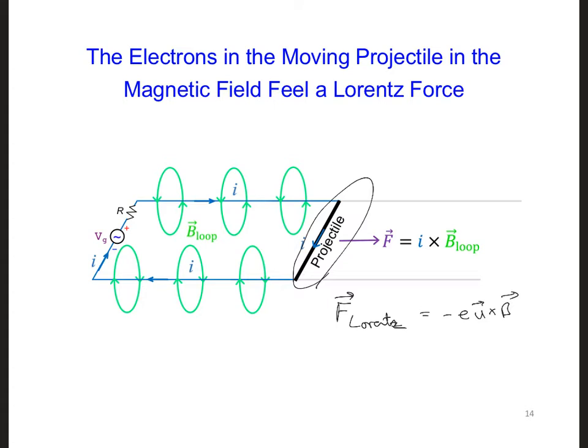So this Lorentz force will move the electrons in what direction? Let's see, it'll move towards the bottom of the projectile, and that will give the end, that end of the projectile, a negative charge relative to the other end of the projectile.